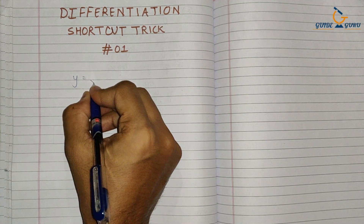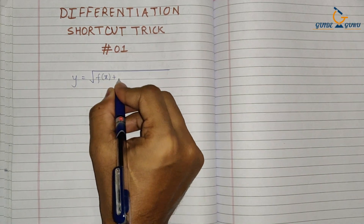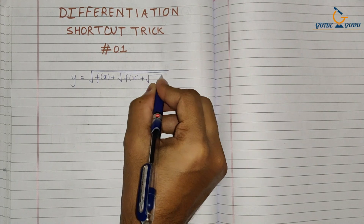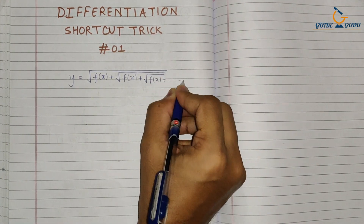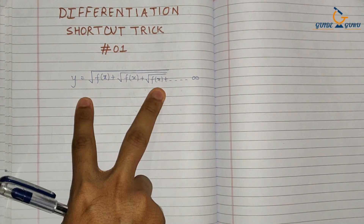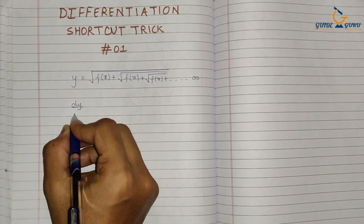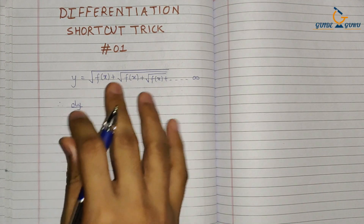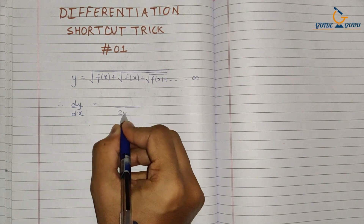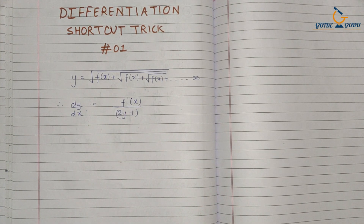Consider if you have a function y equal to the square root of f(x) plus square root of f(x) plus square root of f(x), continuing on till infinity. In order to calculate the differentiation of this kind of infinite series, you can directly calculate the derivative using a shortcut formula.